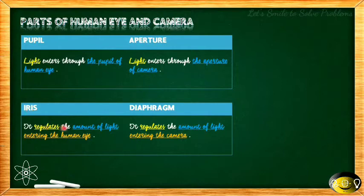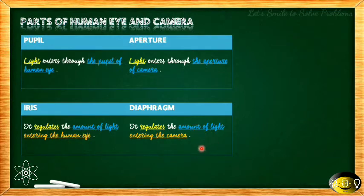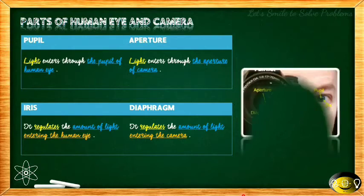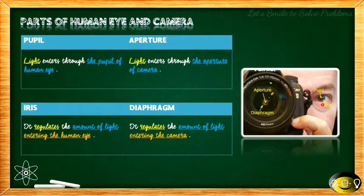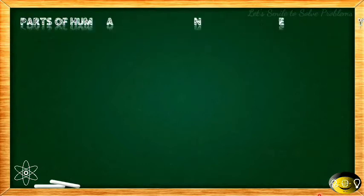Next is iris and diaphragm. The iris regulates the amount of light entering the human eye — it controls how much light passes through the pupil. Similarly, the diaphragm regulates the amount of light entering the camera. Looking at the diagram, the black portion is the pupil and the outer part is the iris in the eye. For the camera, the aperture is the middle portion and the diaphragm is the outer portion.